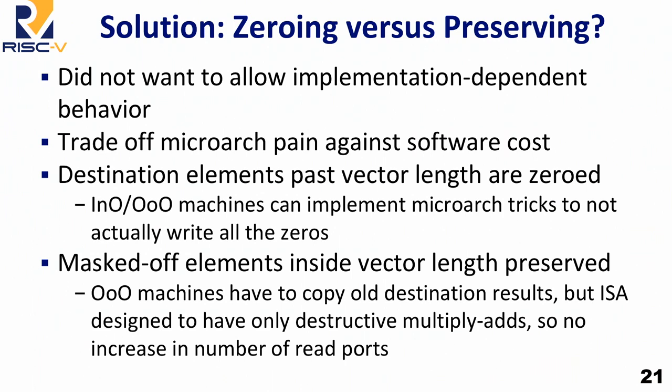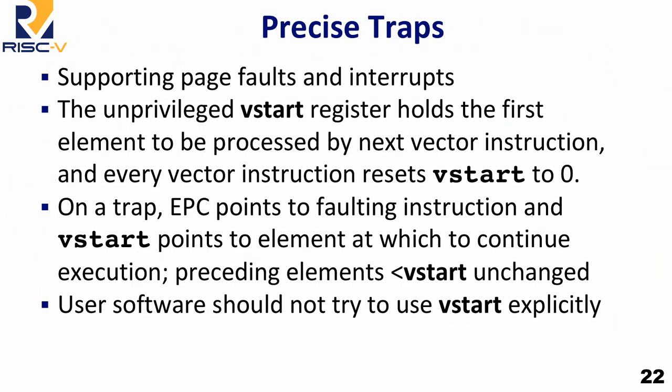To help out-of-order machines, the biggest read-port-count instructions are multiply-adds, and we made those destructive. This means you don't need extra read ports for arithmetic operations to support renaming, because you're reading the old value anyway with destructive MACs. The only thing that hurts is on loads — something we'll be revisiting over the next few months.